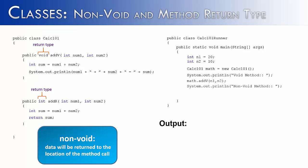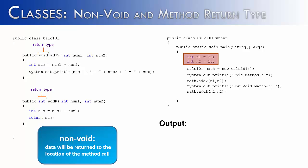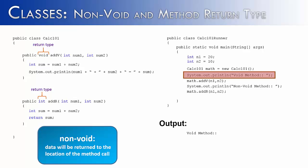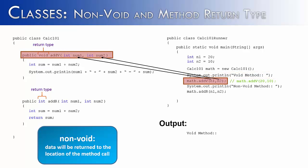Let's see this play out in code. I've changed the code in the main method just a little bit. You'll see I'm printing out 'void method' and 'non-void method', using the void method here and the non-void method down here, differentiated by calling this one addV and this one addR. To start this program, we'd start in the main method, initialize the two values n1 and n2 to 20 and 10 respectively, and create an object of the Calc101 class called math.